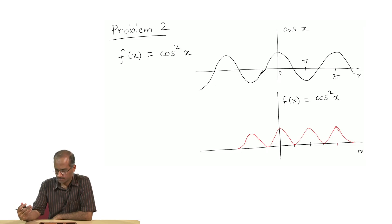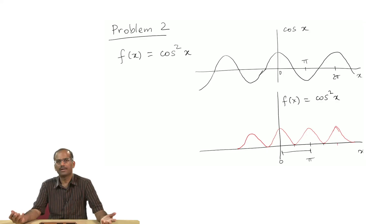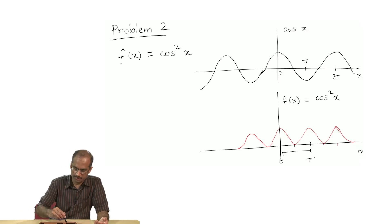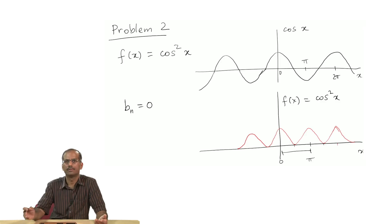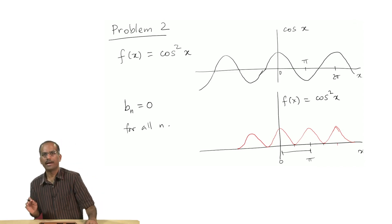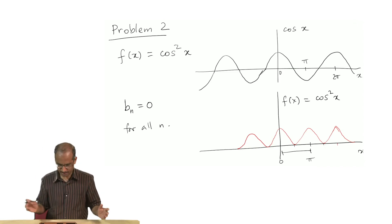Here I have plotted for you the cos²x function. One point to note is that it is an even function, that is very clear from the figure. Basic periodicity would be from here to here which is going from 0 to π. Another thing you can infer is that the average value of the function is not 0. And because it is an even function, without doing any calculation you can say that all the b_n coefficients are going to be 0 straight away for all n.